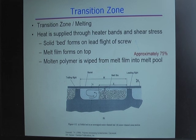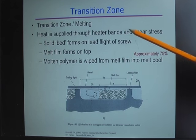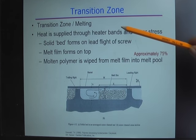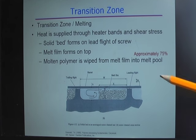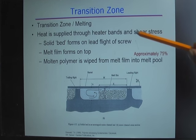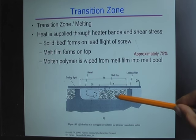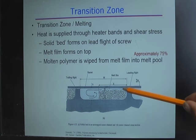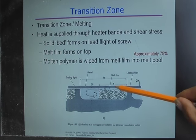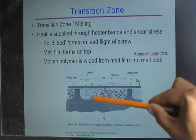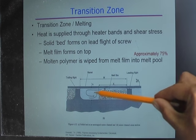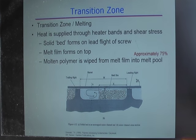In the transition zone, the material gets melted. The heat is supplied from the heater band and from shear stress. The heater band generally contributes only about 25% of the total heat; the majority — roughly 75% — comes from shear heating. The melting mechanism starts with a solid bed of pellets. Once the pellets melt, they form a film on top, and that film gets deposited into a melt pool. This is how pellets are melted during the transition zone.